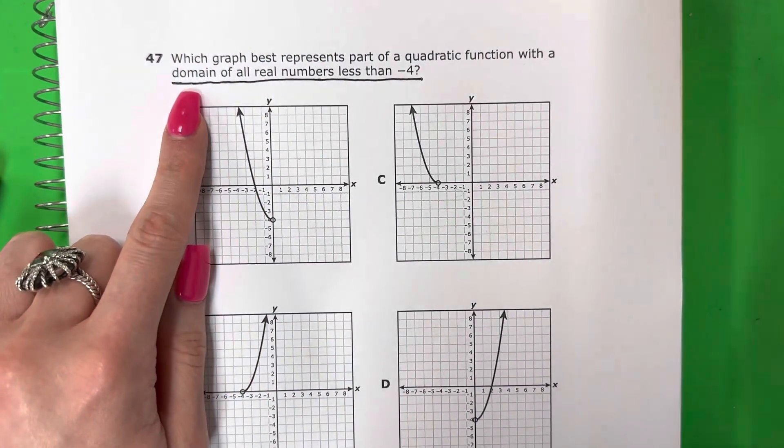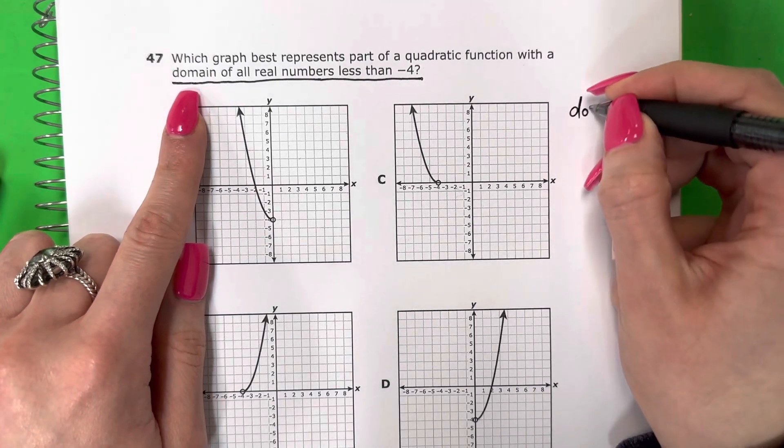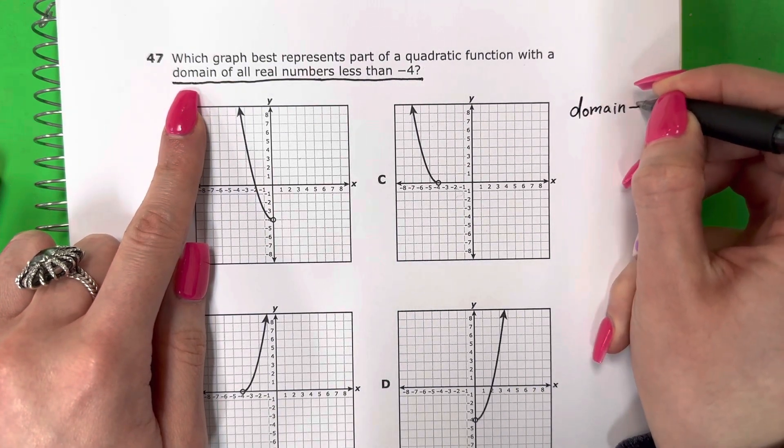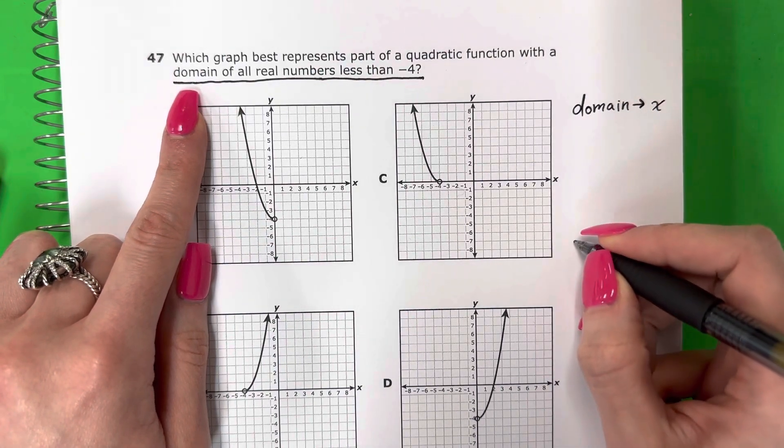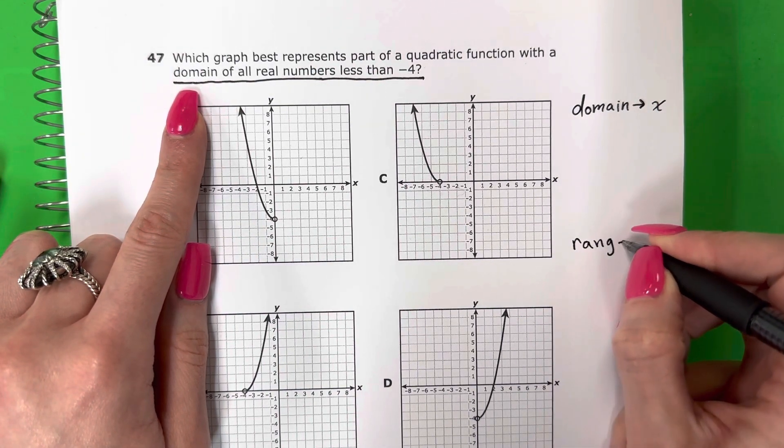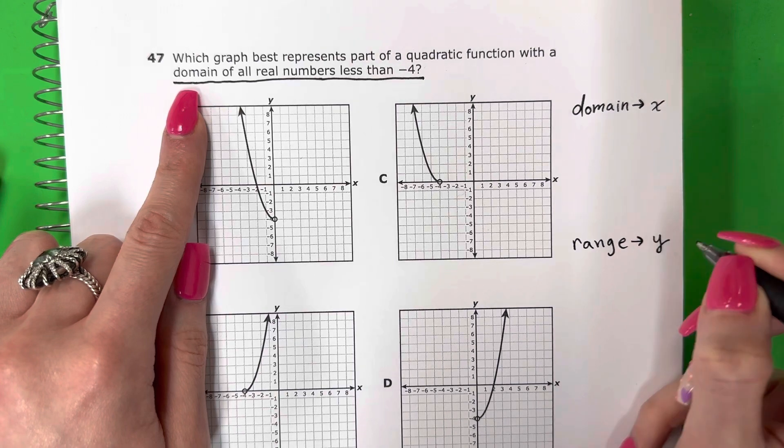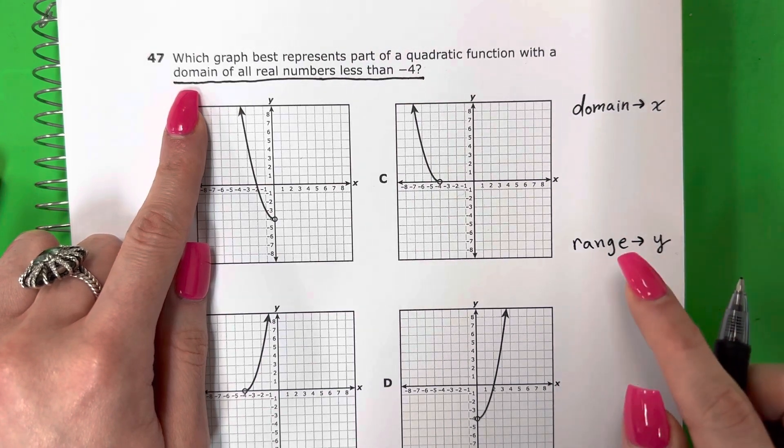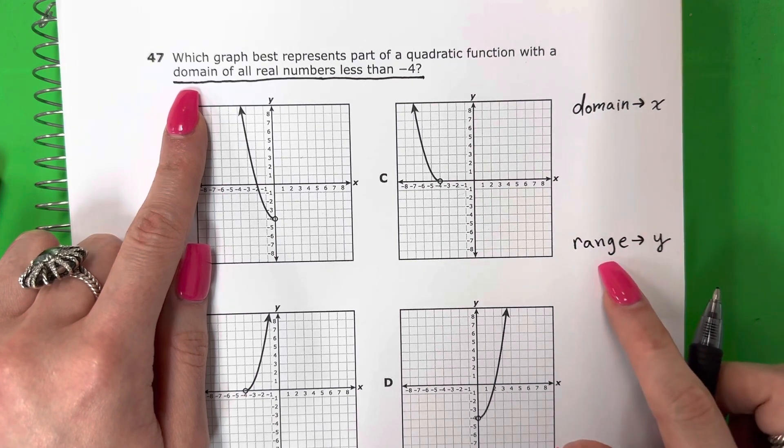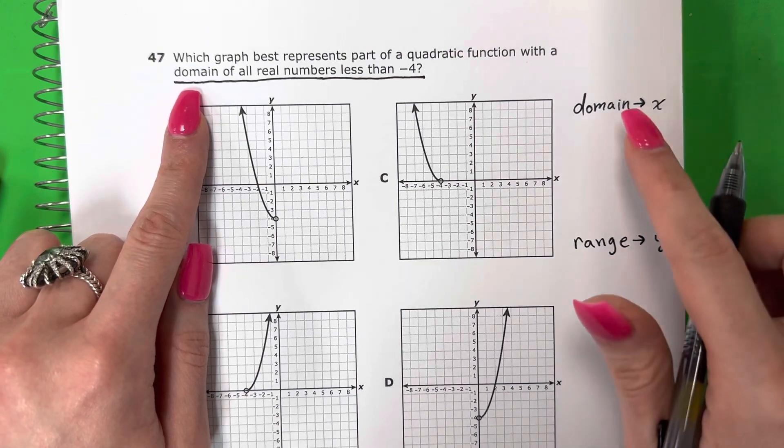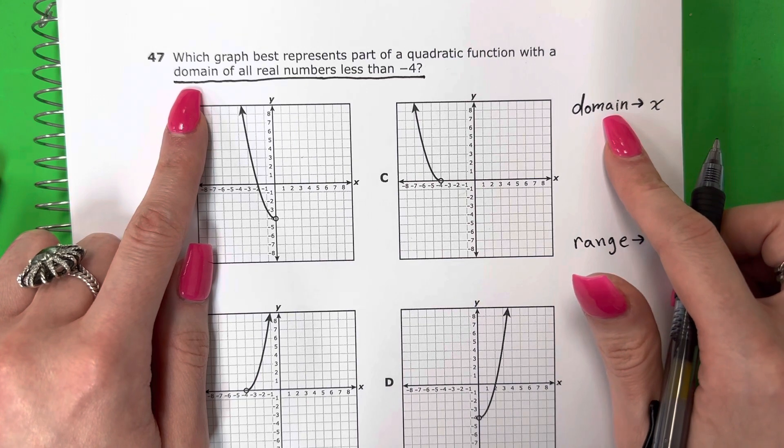Let's talk about what is domain. Domain is for x. El dominio es por x. And then remember there's also range, and that one is for y. But we're not talking about range right now. We're going to focus on domain. Estamos enfocando en domain.